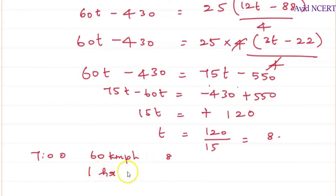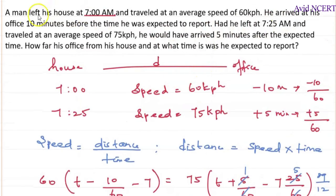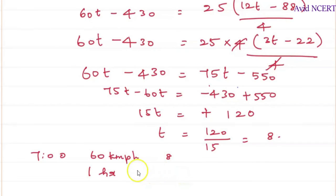Whereas he reached the office 10 minutes earlier, before the time he was expected. So he has reached before 10 minutes, 10 minutes before 8 is 7:50.